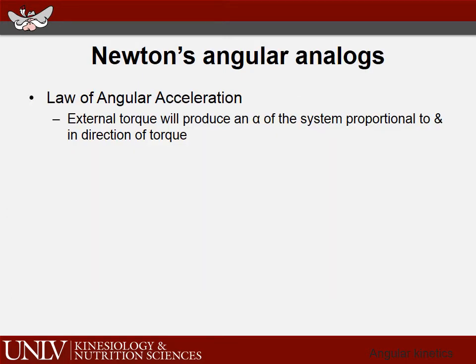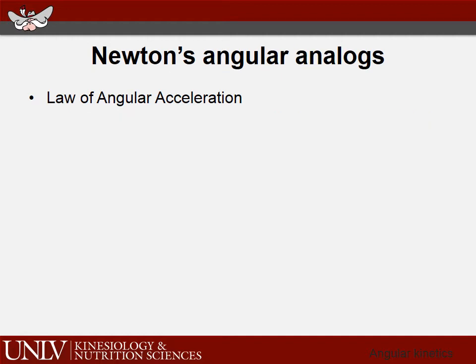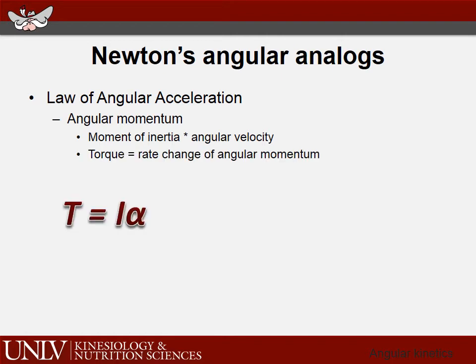Now let's move on to Newton's second law — the law of angular acceleration. External torques produce an angular acceleration proportional to and in the direction of the torque, but inversely proportional to the moment of inertia. The equation is: Torque equals I (moment of inertia) times alpha (angular acceleration). Torque is the angular analog of force, I is the angular analog of mass, and alpha is the angular analog of acceleration. Angular momentum is the quantity of angular motion: moment of inertia times angular velocity. Torque is the rate of change of angular momentum.